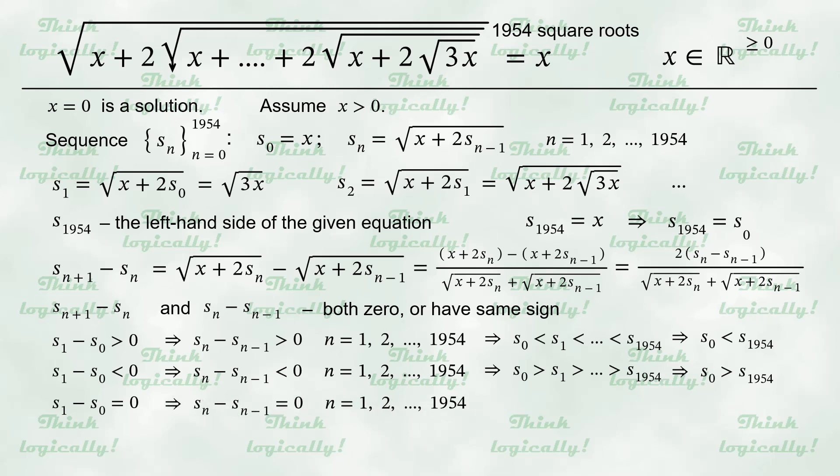Therefore, the only case we can be pleased with is S sub 1 minus S sub 0 equals 0. So, all the differences of two consecutive elements are 0, all the elements have same value, and the starting element is equal to the last element, just what we need. So, the only thing remained is solving the equation S sub 1 minus S sub 0 equals 0.